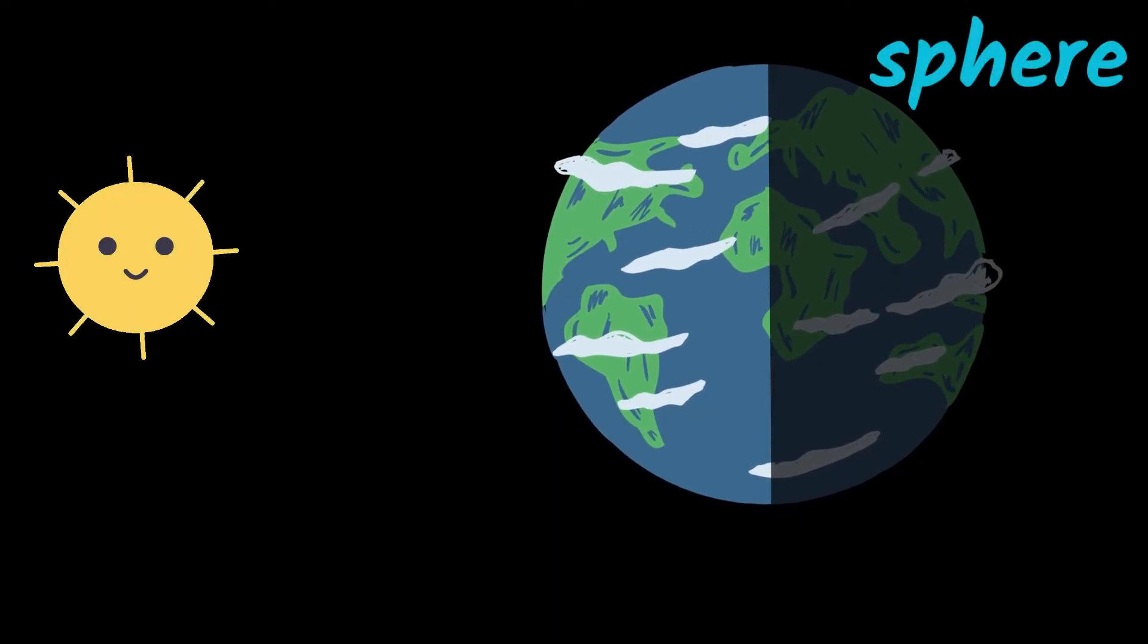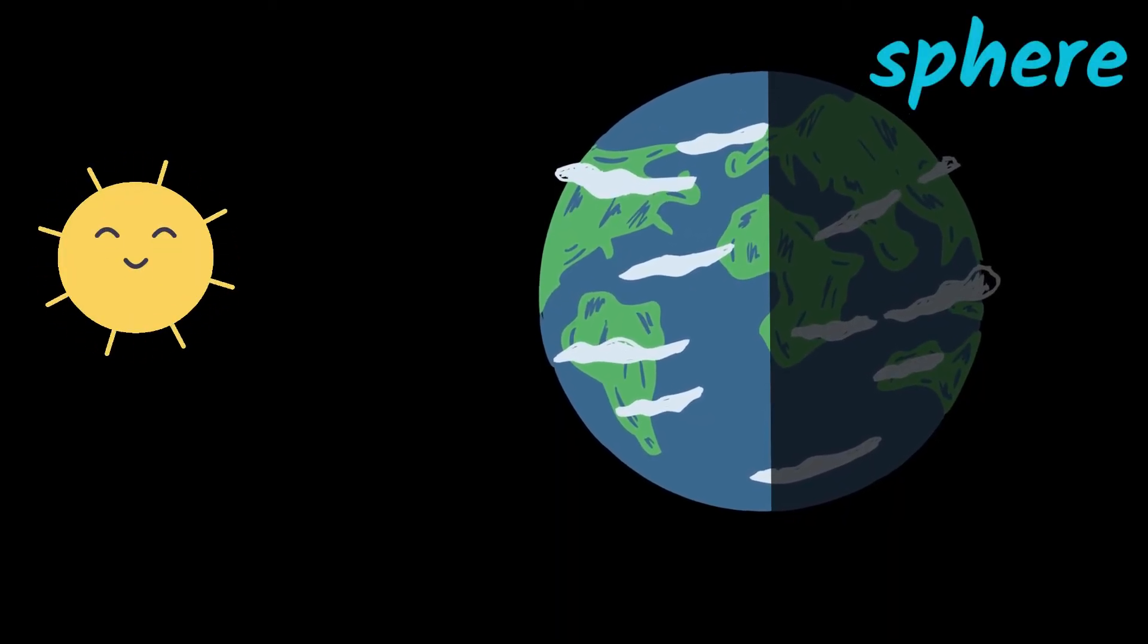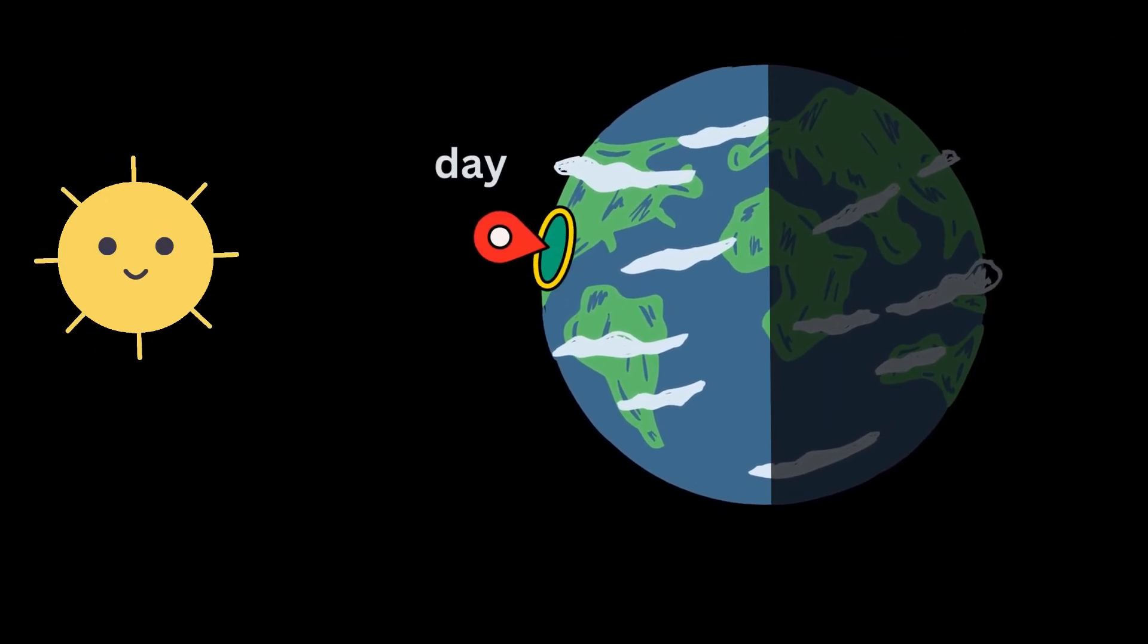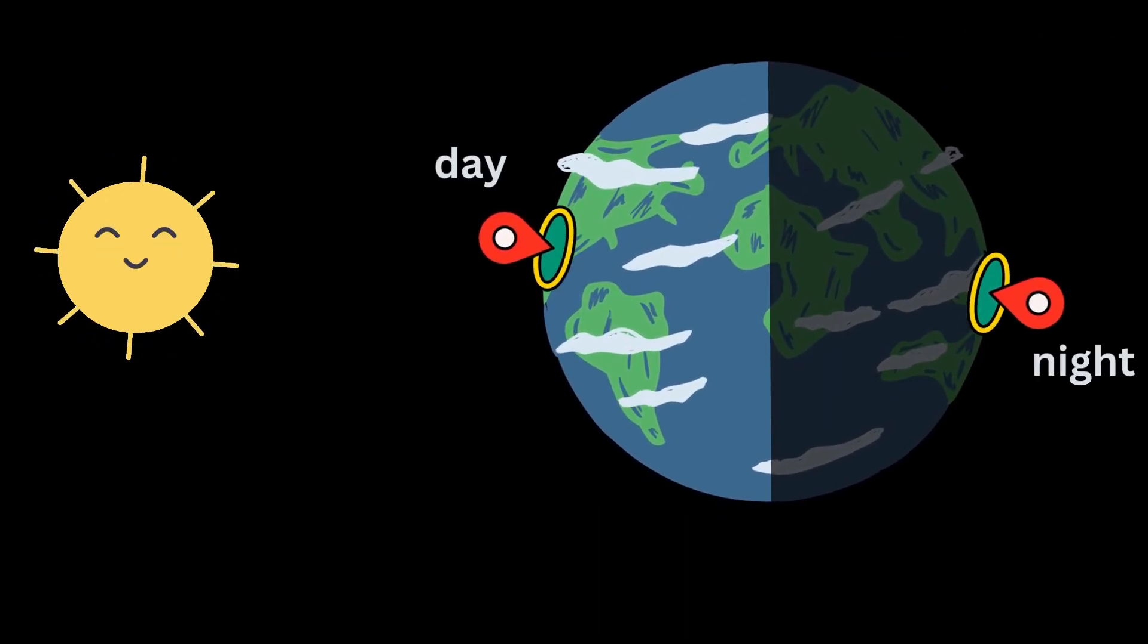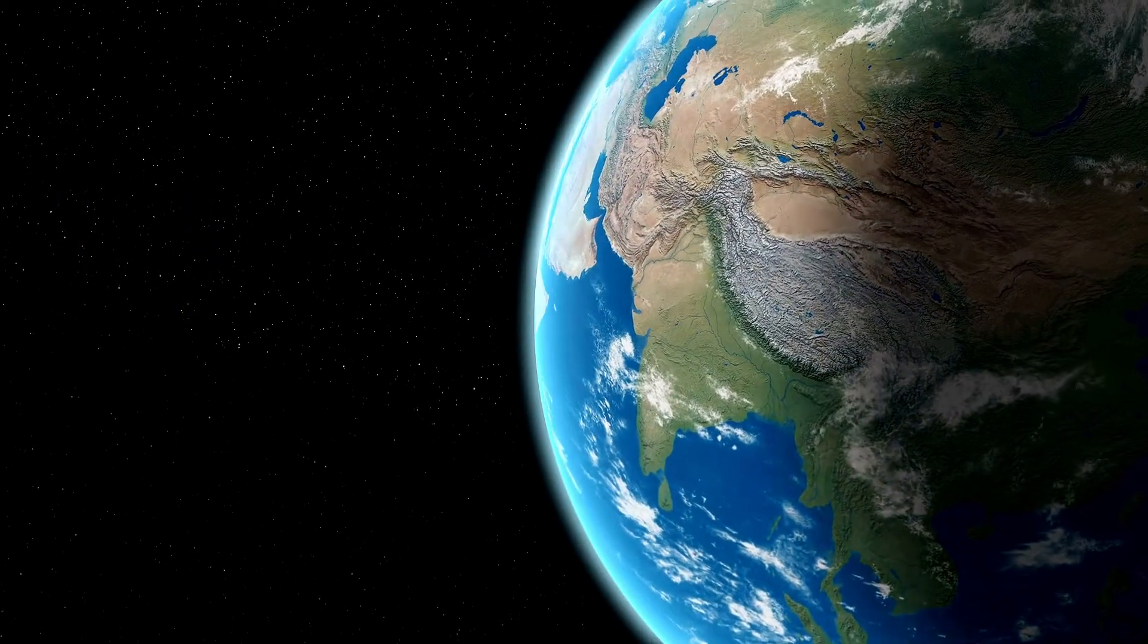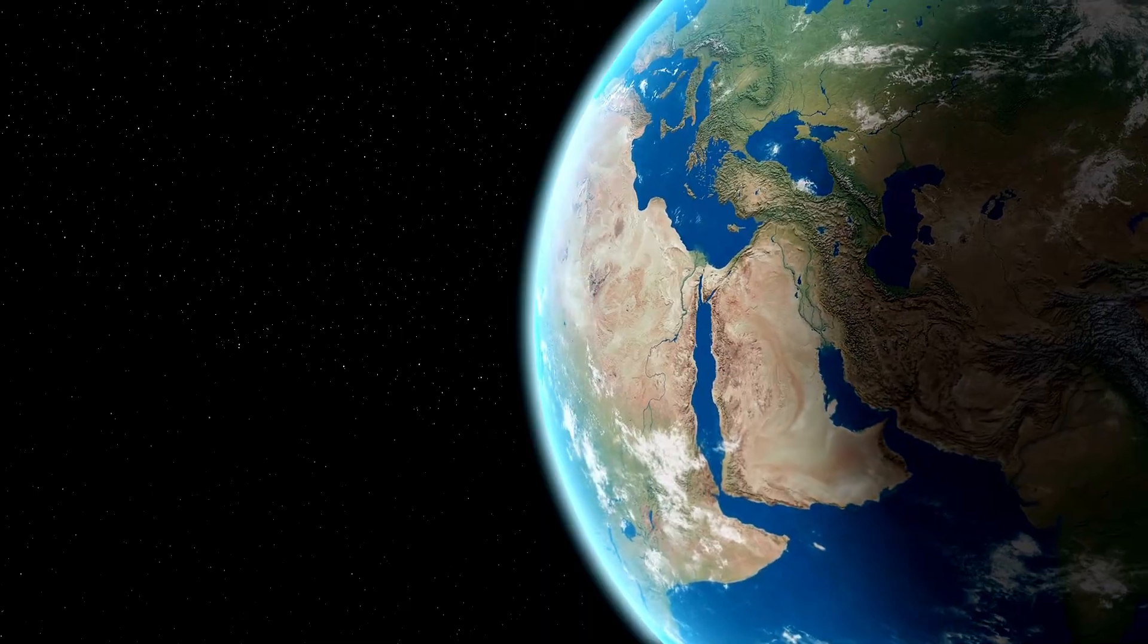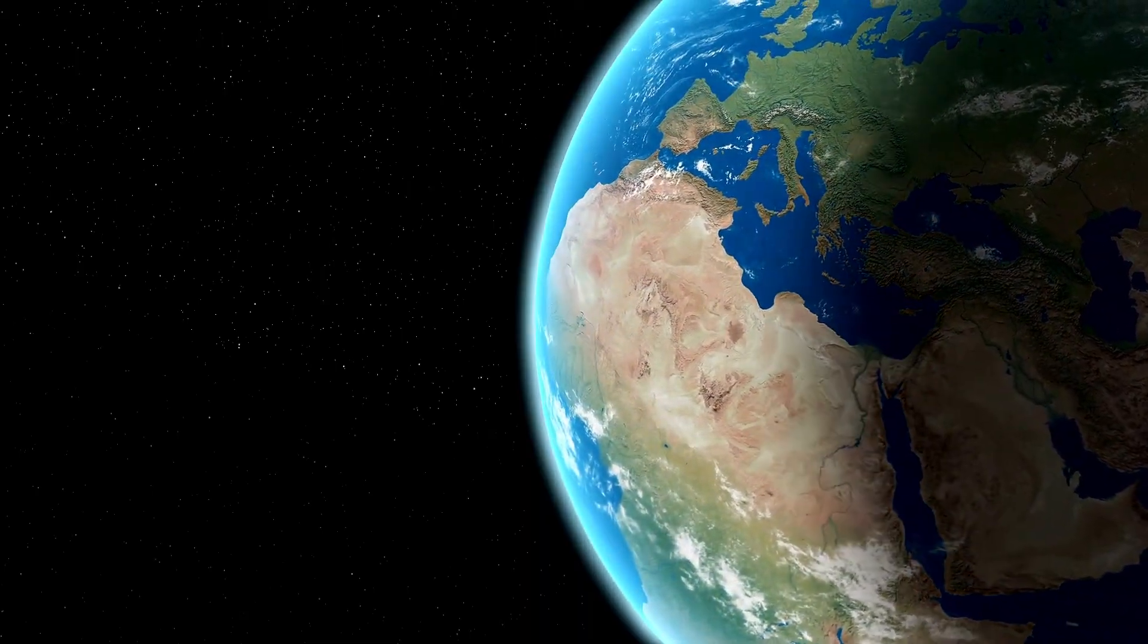Because the Earth is a sphere, it's impossible for everywhere on Earth to face the sun at the same time. This means when it's daytime in one place, it's nighttime on the other side of the world. Everywhere on Earth experiences day and night at some point every 24 hours because the Earth keeps spinning in space.